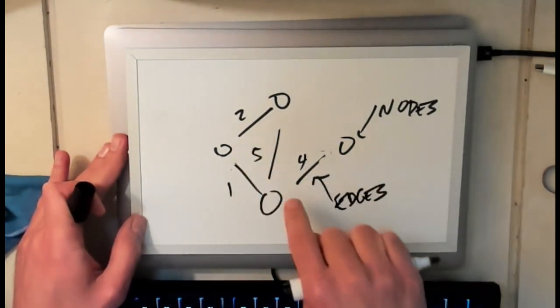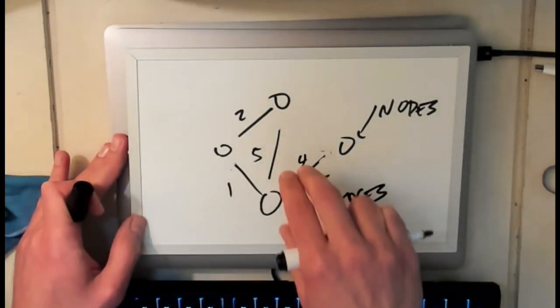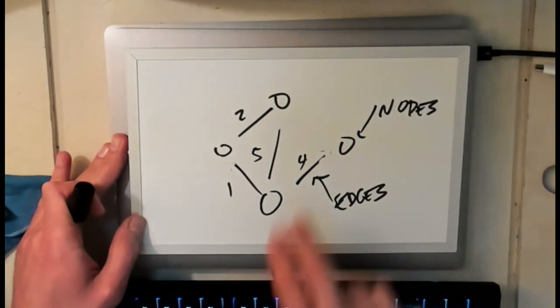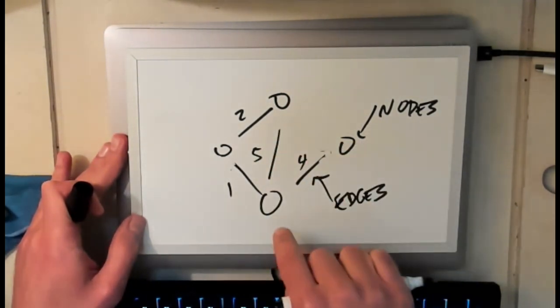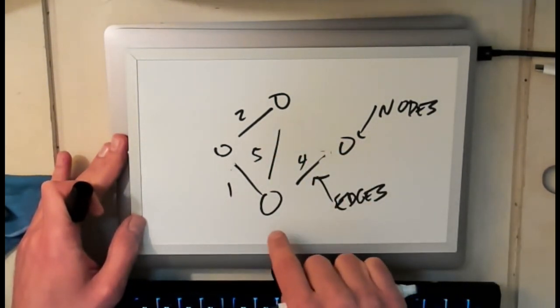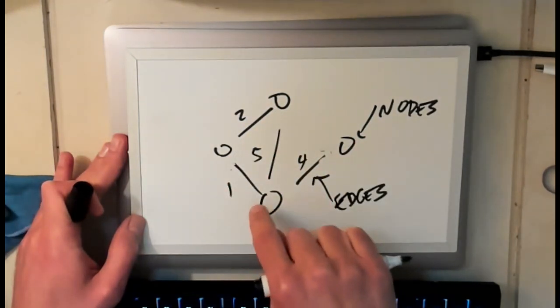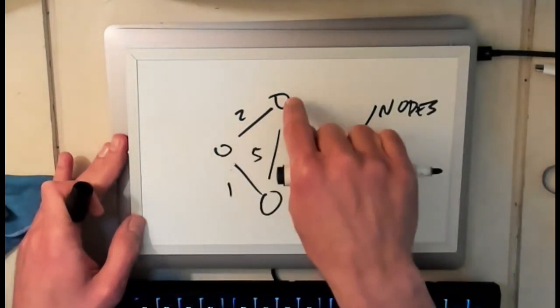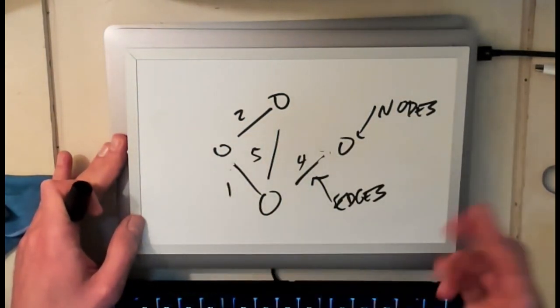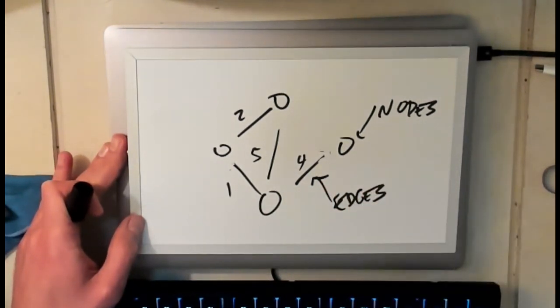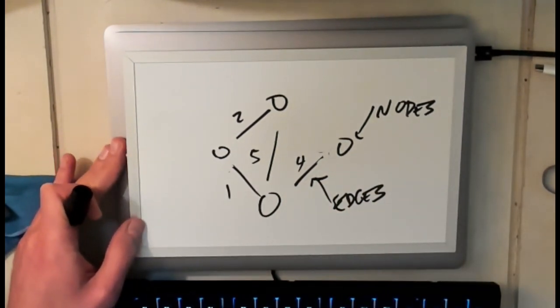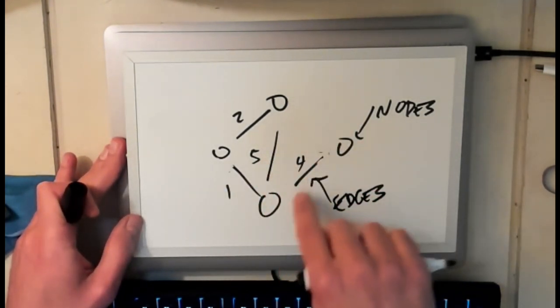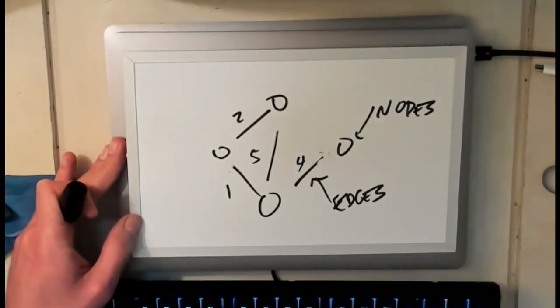And now the edges have properties and you can imagine that this might represent something about the relationship between these two nodes. This might be the distance between the two nodes. Now this is a little bit confusing because these two nodes like the distances to get here don't add up but sometimes that's how things work, right? It could represent like the cost to traverse between two nodes. It could represent the weight. Like if this is a social graph, this might be the strength of a relationship between these two people.